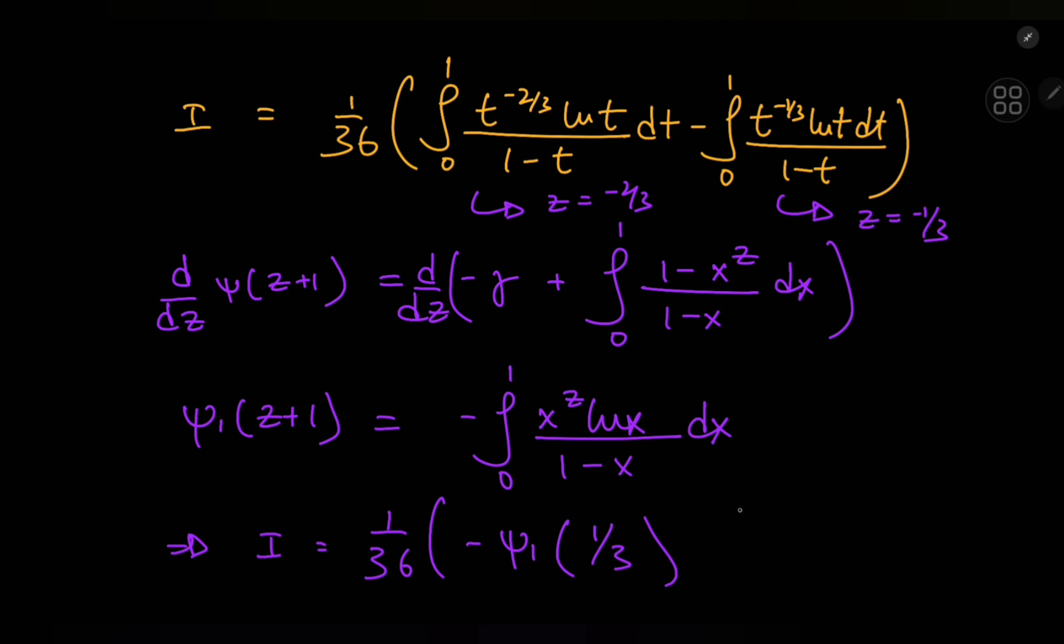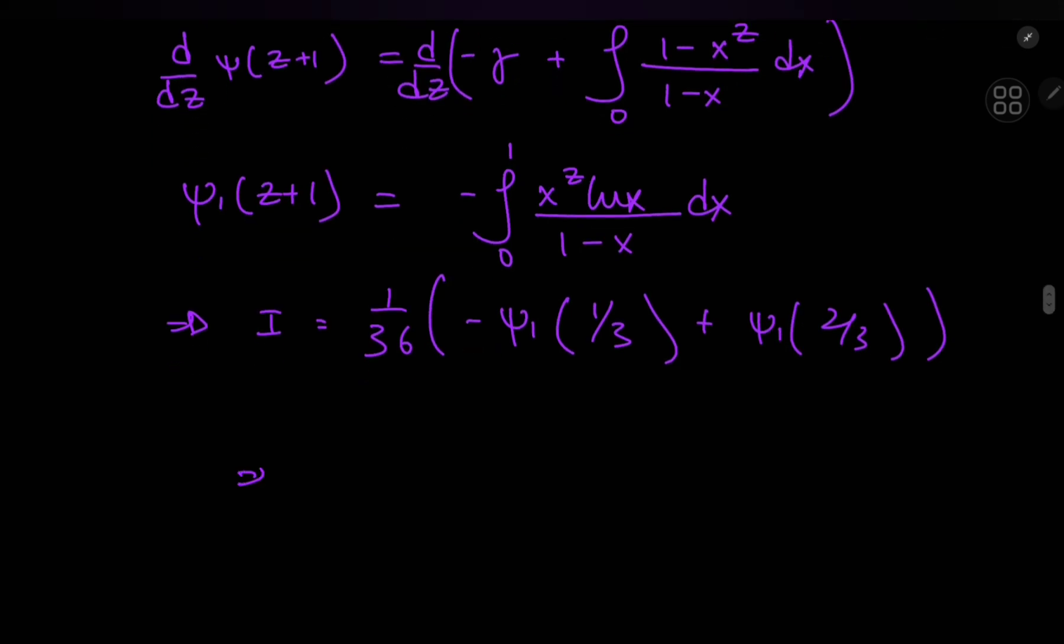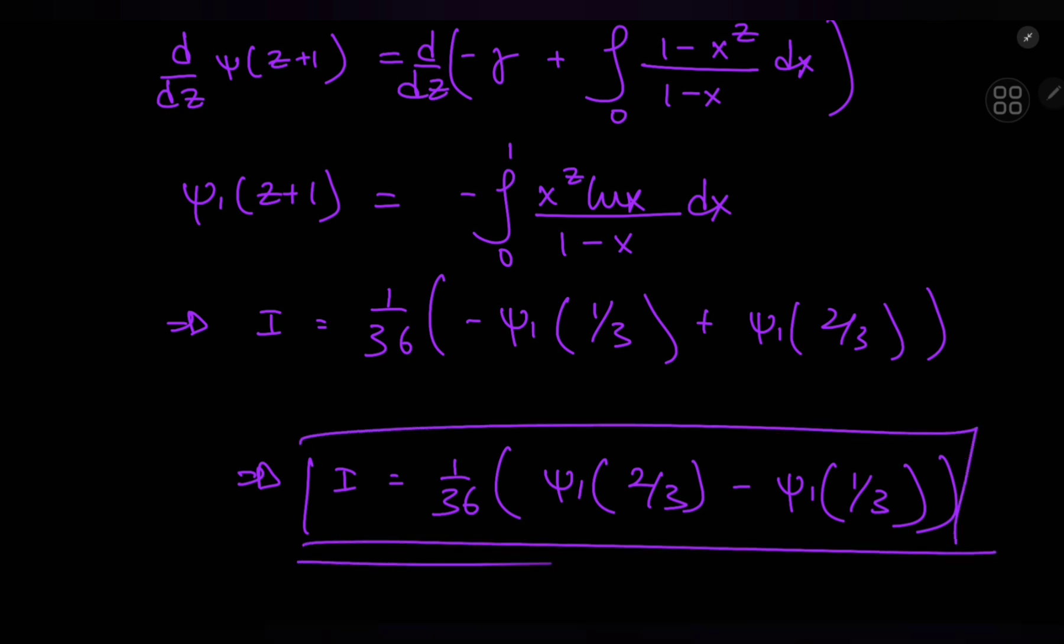Okay, cool. Plus trigamma 2 thirds, right? And this implies that i equals 1 by 36. We have the trigamma function at 2 thirds minus the trigamma function at 1 third, which is a pretty awesome looking result indeed.